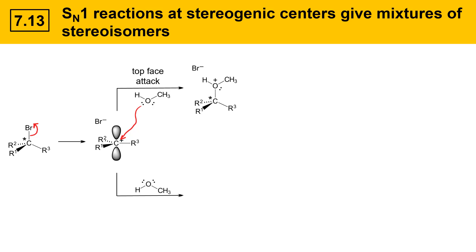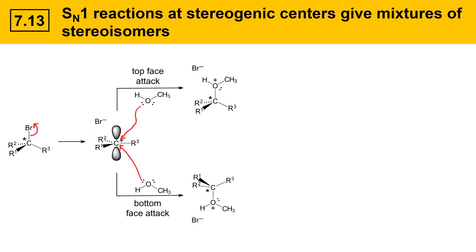If the nucleophile were to attack from the bottom face, we'd get the following result. The R groups 1, 2, and 3 would now bend towards the upper part of the screen, trying to get out of the way of the approaching nucleophile, and that would give the following stereochemical result.